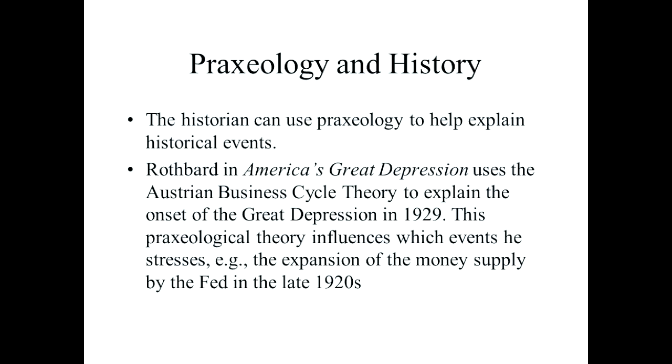One point that Mises stresses very much is that the historian can use praxeology to help him explain historical events. Praxeology is concerned with the general form of action — trying to say what are the characteristics that all action has in common. It doesn't enable you to deduce from praxeology that particular events have happened, but you can use praxeology to help explain particular events. For example, Murray Rothbard, in his 1963 book America's Great Depression, uses Austrian business cycle theory to explain the onset of the Great Depression in 1929.